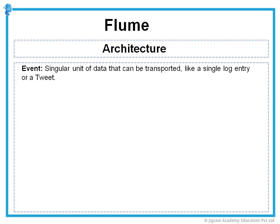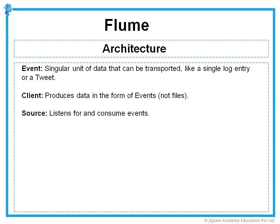An event is made up of headers and a byte array body. Next is Client — clients produce data in the form of events and transmit the events to the source. Then we have Source. The source is the part of Flume that connects to a source of data and starts the data along its journey through a Flume data flow. Sources operate by gathering discrete pieces of data, translating the data into individual events and delivering it to the channel. Flume sources listen for and consume events, which can be anything like a tweet or a log entry. It all depends on what sources the agent is configured to use. Flume agents may have more than one source but must have at least one.